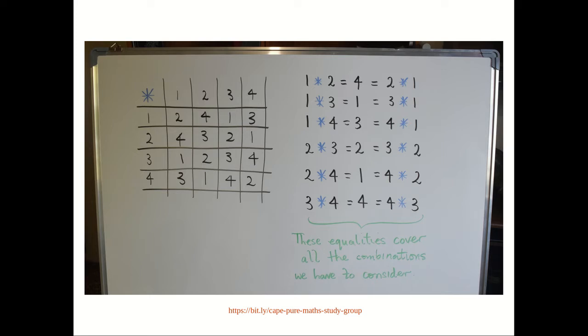1 star 2 is equal to 4, and 2 star 1 is equal to 4. 1 star 3 is equal to 1, and 3 star 1 is equal to 1. So by changing the order of the operands, we did not change the result.